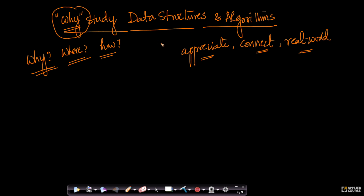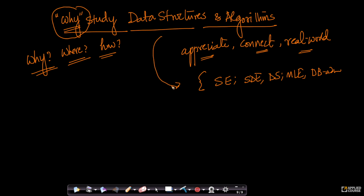Most people studying computer science would eventually become software engineers, software development engineers, data scientists, machine learning engineers, database admins, or similar roles. How is everything you're going to learn in data structures and algorithms going to be useful for the next 30 or 40 years of your career? These are very important questions we'll address in this video, so that when we learn the actual content, you'll be connected to real-world applications you see every day.